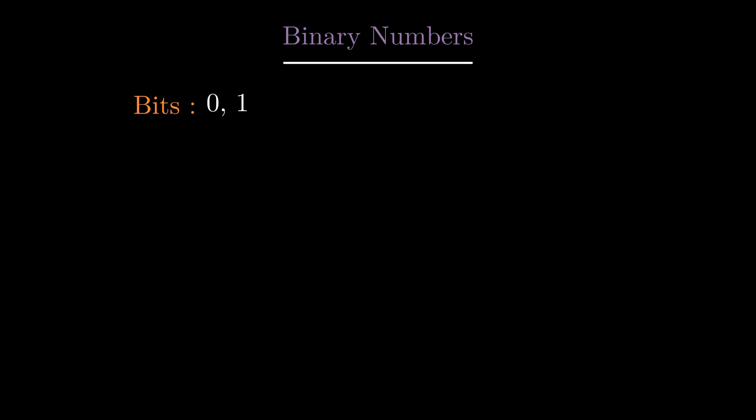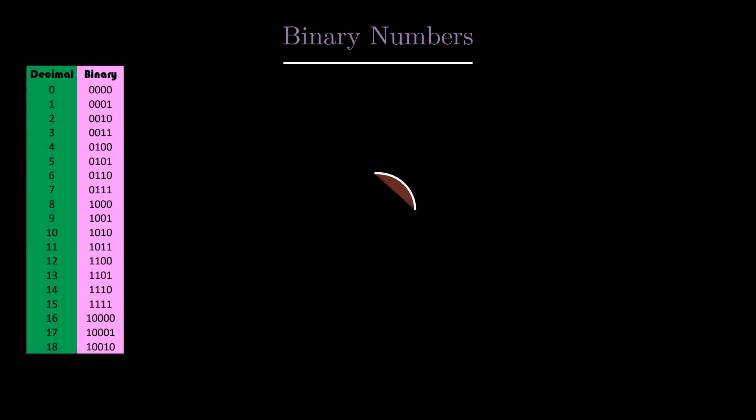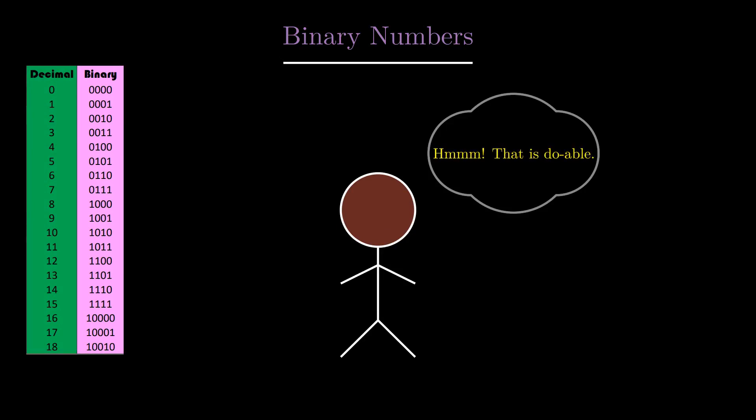For example, the number 1001 has 1 in the 0th index from the right, and the third index from the right. So it is equivalent to 2 raised to the power 0 plus 2 raised to the power 3, that is equal to 9. This is how binary numbers are defined. And there is this conversion table for converting from binary number to decimal number system, back and forth that you can easily formulate for conversions.